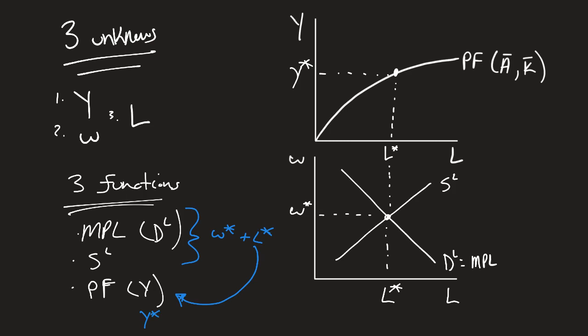And what exactly is this Y star? Well, Y star is the full employment output. Because we have our L star, which is that full employment level of employment, this Y star is going to be my full employment level of output. And this is us putting the classical labor market and the production function in complete equilibrium.